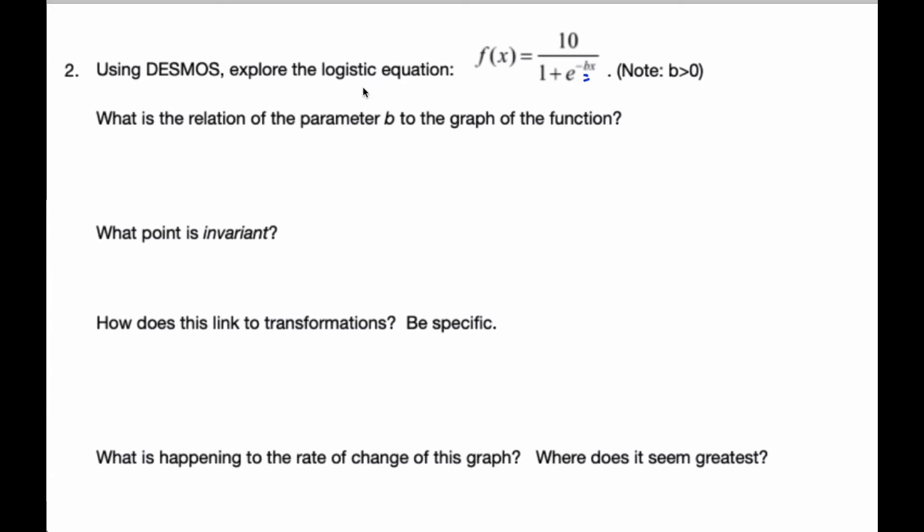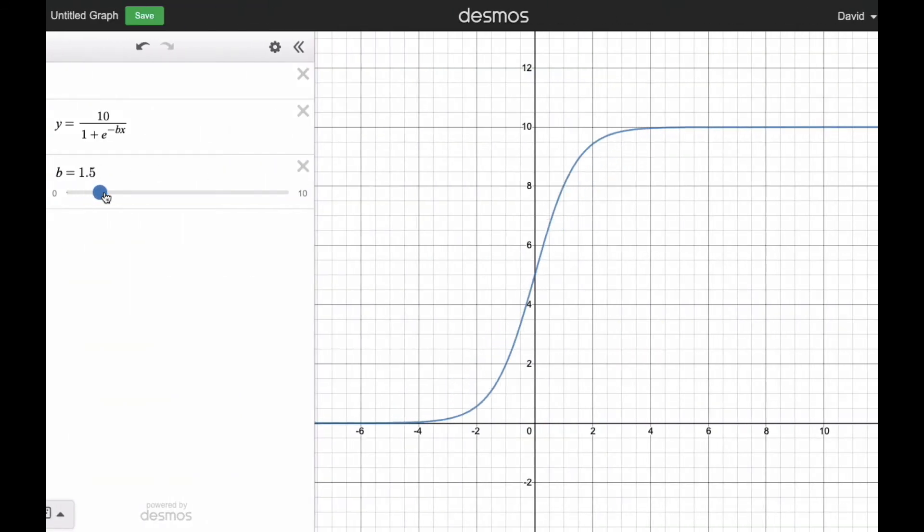So what is the relationship between the parameter B and the given function? Well, it is the rate of how it is growing. It controls how quickly the population grows. The bigger B is, the faster the population grows.